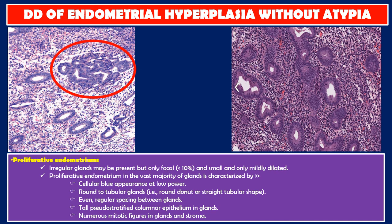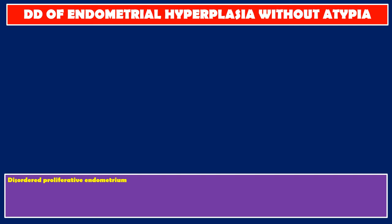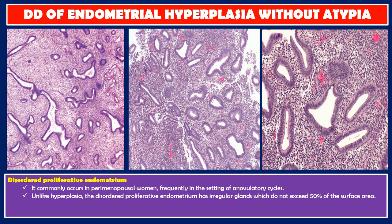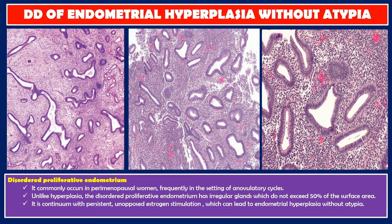Disordered proliferative endometrium commonly occurs in perimenopausal women, frequently in the setting of anovulatory cycles. Unlike hyperplasia, disordered proliferative endometrium has irregular glands which do not exceed 50% of the surface area. It is continuous with persistent unopposed estrogen stimulation, which can lead to endometrial hyperplasia without atypia. Frequently both conditions co-exist in the same sample.